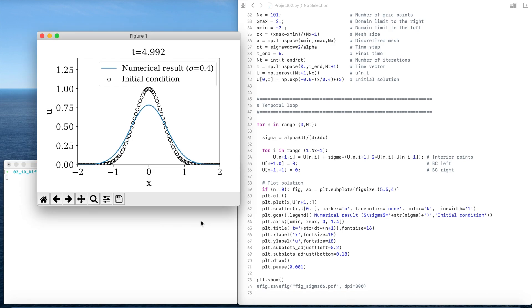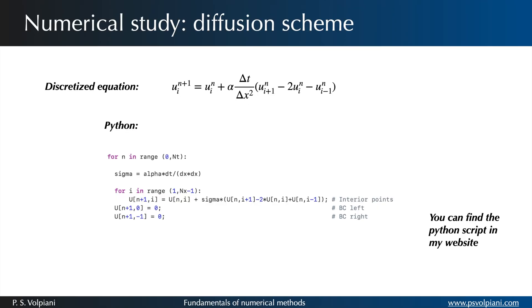So here I show you the initial condition and the numerical solution for sigma equals 0.4. In our simulations, we discretize the domain in 101 points and we tested two values of sigma, 0.4 and 0.6, to validate the stability criterion that we just derived.